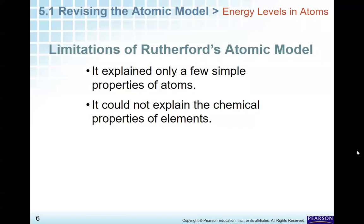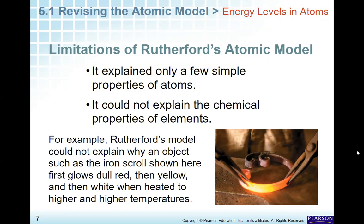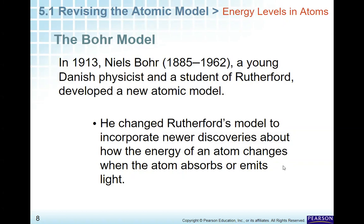Okay, so we noticed that there was some limitations to Rutherford's atomic model. It explained only a few simple properties. It could not explain chemical properties of elements. And that's really where Niels Bohr came in. So the example of this right here, we see that it can't explain why iron will glow at higher temperatures. Now, at higher temperatures, it glows because the electrons are getting excited, and they're moving to those outer energy levels as in Niels Bohr.